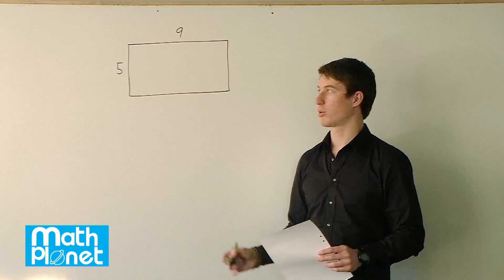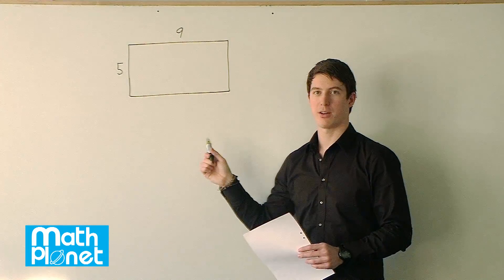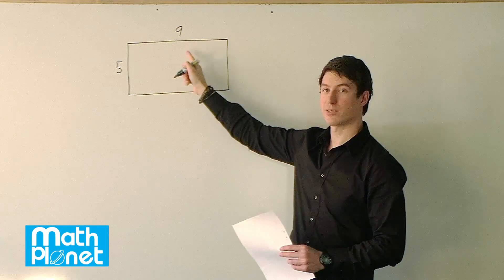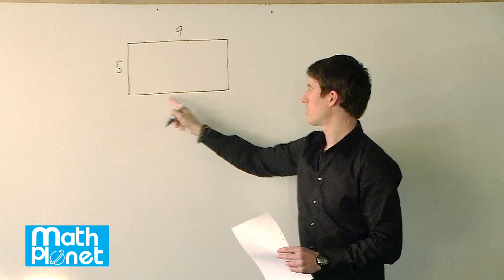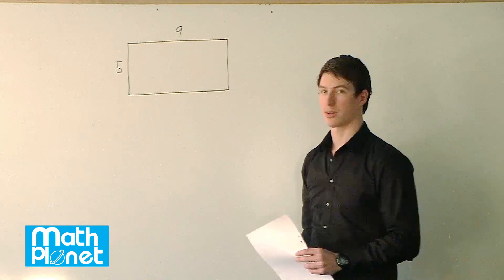Given this rectangle, we want to calculate both the perimeter and the area of this thing. So if this is 9 feet and this is 5 feet, can we calculate the perimeter around the whole thing and the area of the rectangle?